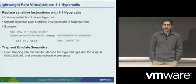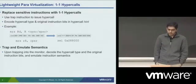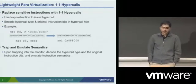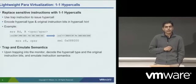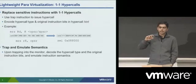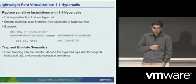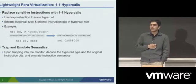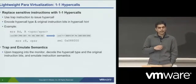Let's look at how we implement lightweight para-virtualization in detail. The idea is very simple: you replace all of the sensitive instructions in the guest operating system kernel with one-to-one hypercalls. We also have other replacements where you replace them with the emulation sequence itself. We typically use a trap instruction to issue this hypercall from the guest OS into the hypervisor or monitor, and we encode the hypercall type and the hypercall instruction bits within what we call the hint.